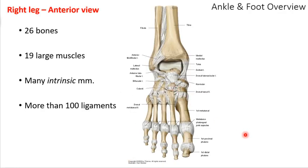The foot and ankle is a complex structure — there's a lot going on. There are 26 bones, a lot of muscles, and a bunch of ligaments. What the foot and ankle has to do is pretty remarkable: it has to be able to adapt to the surface it's on, being very flexible to adapt to rock, stone, or angles, and then within milliseconds become very rigid so it can push off without any loss of torque or energy efficiency.